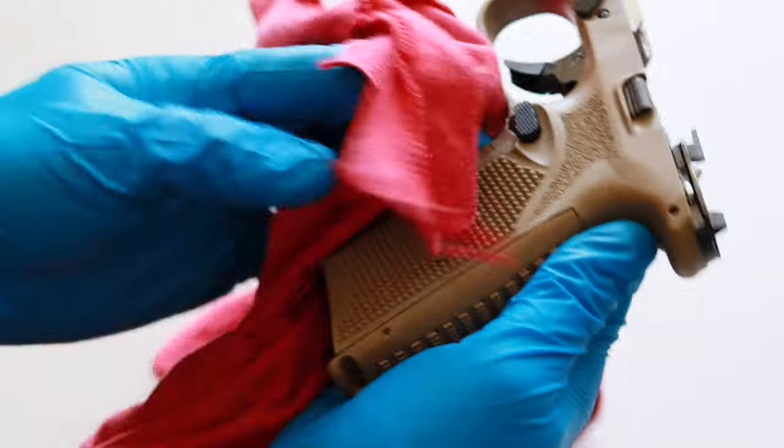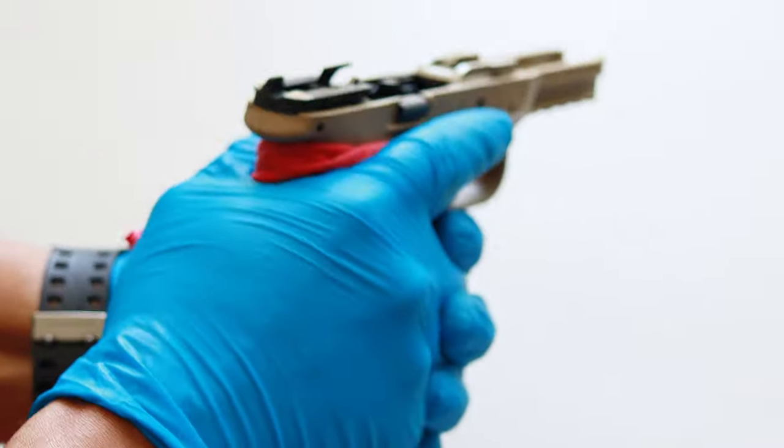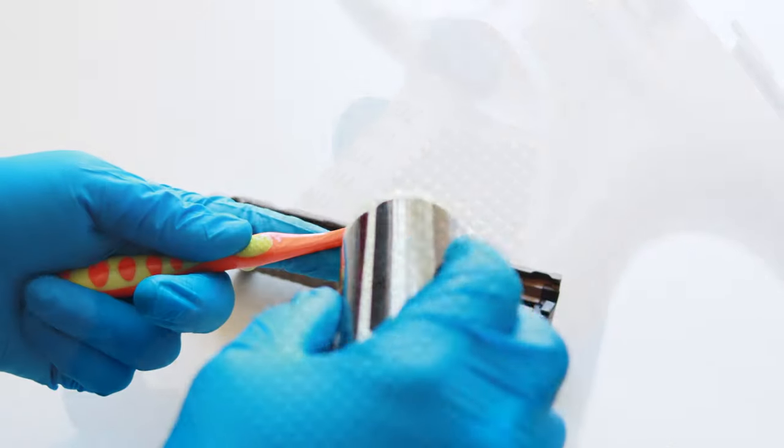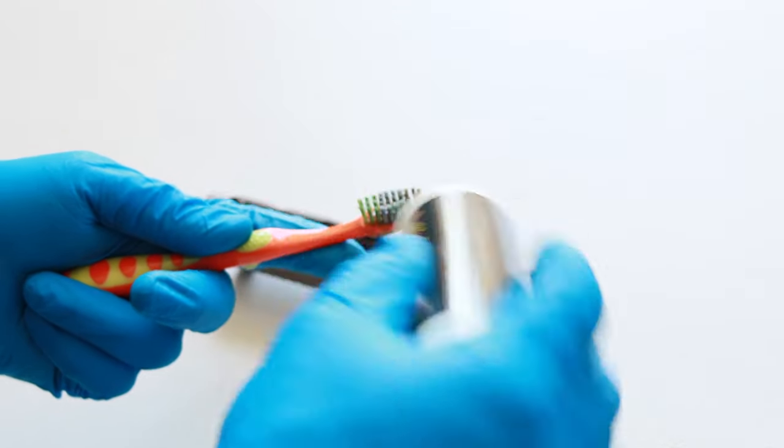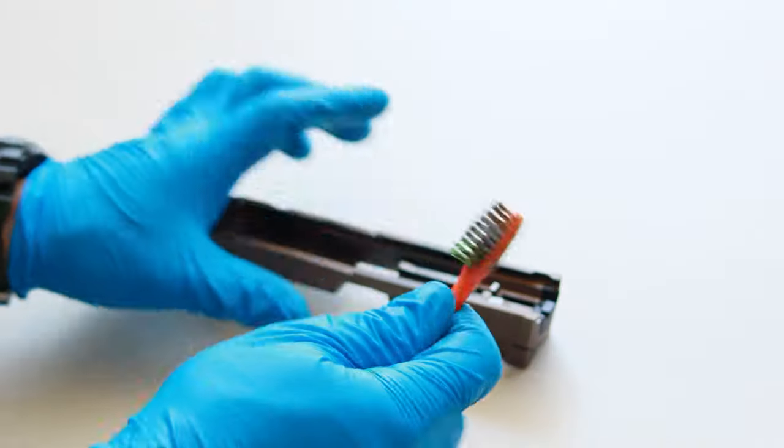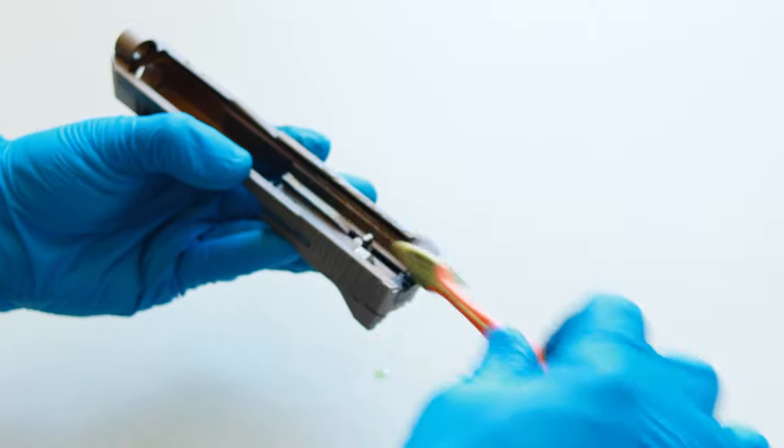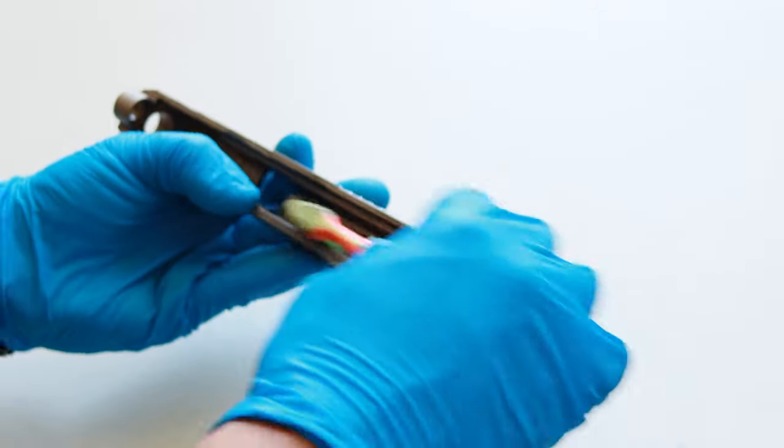The 509 has really good and deep stippling. The easiest way to dry off the excess CLP is just wrap your rag around the grip and squeeze. Now let's clean the slide. Add CLP to your nylon brush and start cleaning all visible surfaces. Much like we did with the frame, first we're going to get off all the loose carbon and fouling, and then we're going to go through it in fine detail.